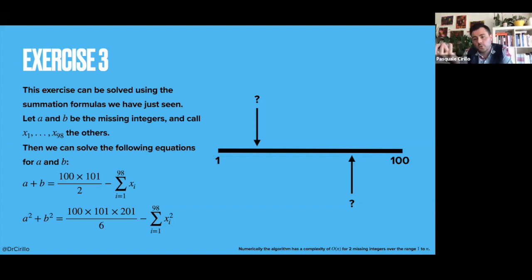But this is one equation with two unknown quantities, a and b. So it is not sufficient to uniquely identify a and b. But I can add a second equation, and I can use the second summation result that we saw.